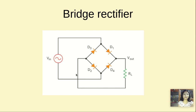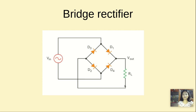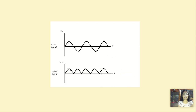In the negative cycle, when this terminal is positive and this is negative, the positive side goes through D4 and the current flows down — meaning the polarity remains the same and we also get an output. In the negative cycle, the current goes through D3 in this direction. So basically we get output in both cycles where the polarity does not change.